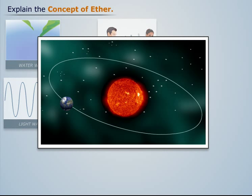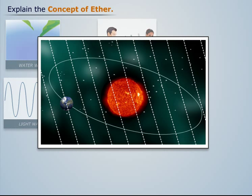It was assumed that ether is the medium through which light waves propagate. Ether was assumed to be present everywhere, even in free space.